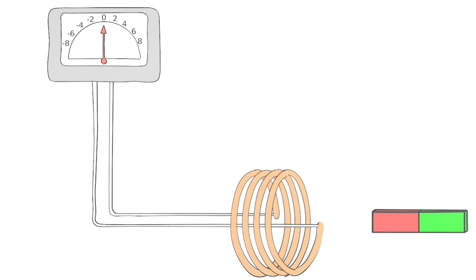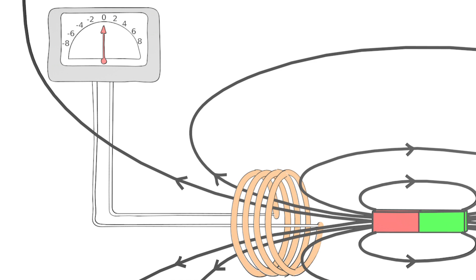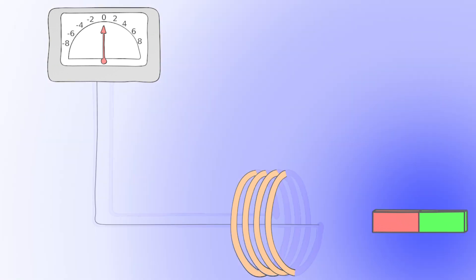In order to be able to explain this clearly, it is helpful to depict the magnetic field of the bar magnet. Usually, a magnetic field is represented using magnetic field lines. In this case, we represent the magnetic field in color. The darker the blue, the stronger the magnetic field. The magnetic field is strongest in the vicinity of the bar magnet and then decreases more and more with distance.